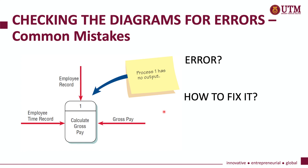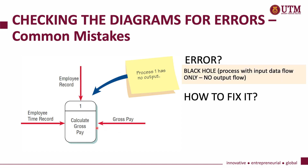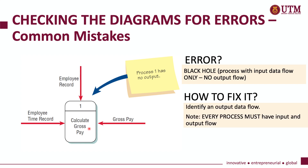Here are some examples of data flow diagram errors. One of the most common mistakes made by students is shown here: process one, 'calculate gross pay', does not have any output data flow. This is called a black hole — it only has input with no output. To fix this, you must identify an output data flow. Remember, every process must have both an input and an output flow.